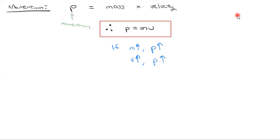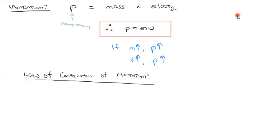When Newton was doing his analyses, he found that if we calculated this quantity called momentum — mass times velocity — then in certain situations it would stay constant. That is the law of conservation of momentum, which is actually a pretty fundamental law in physics. The law of conservation of momentum basically means that the momentum before equals the momentum after. You can express this as p-initial equals p-final.